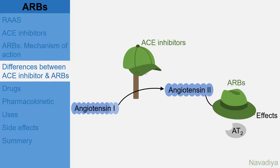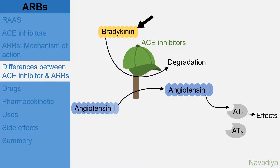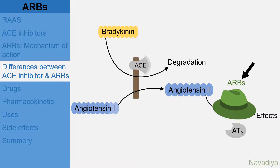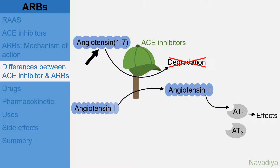That said, there are some differences. A clinically important difference is that with ACE inhibitors, bradykinin degradation is blocked. So bradykinin levels increase, which causes side effects like cough and angioedema. However, with ARBs, bradykinin degradation is intact, so cough and angioedema are less frequent with ARBs. Similarly, angiotensin 1-7 levels also increase with ACE inhibitors but not with ARBs.